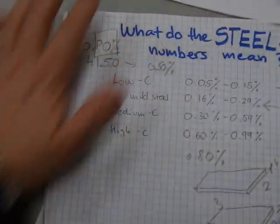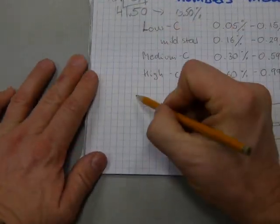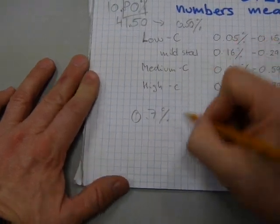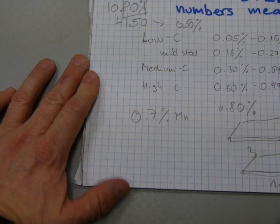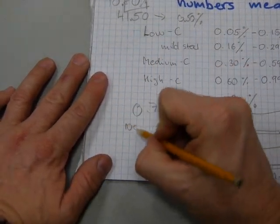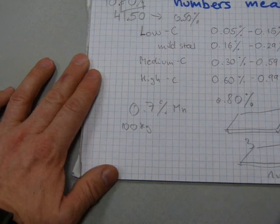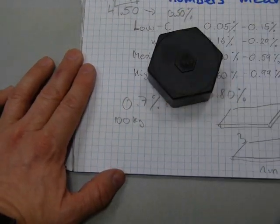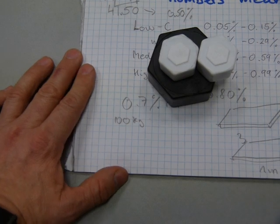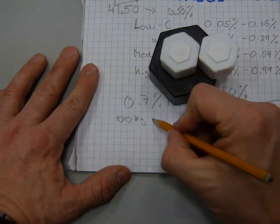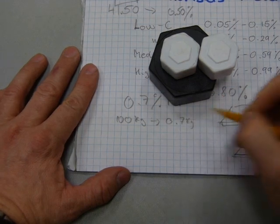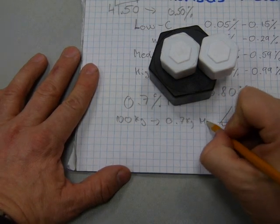And you can see that they all contain, well now I'm gonna round it to 0.7 percent, how about that one. Now 0.7 percent of manganese means that out of a hundred kilograms of finished product, 0.7 kilogram or 700 grams is manganese.